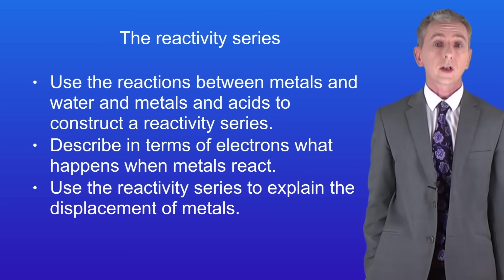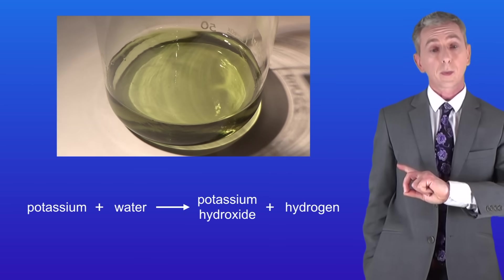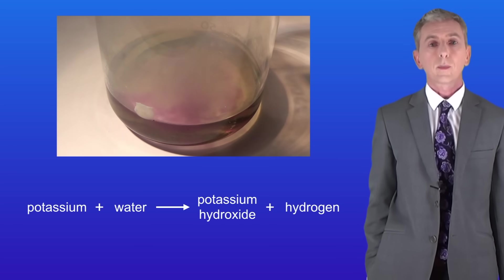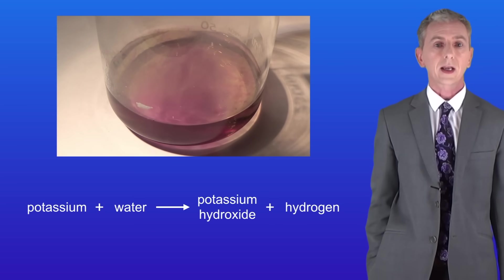In a previous video we looked at how group 1 metals react with water and I'm showing you here the reaction of potassium with water. As you can see this is an extremely vigorous reaction. When potassium reacts with water we make the alkali potassium hydroxide and the gas hydrogen.